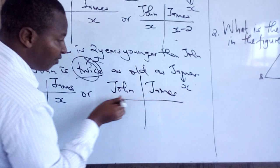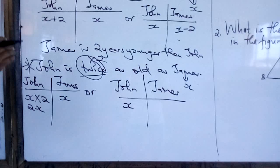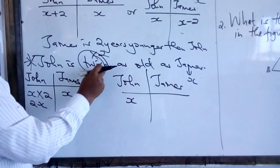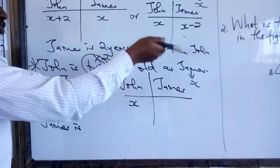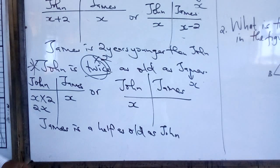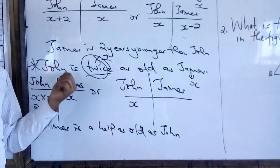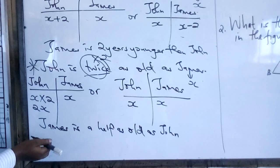Alternatively, you can put x under John, but then you must rephrase starting with James. The statement is: John is twice as old as James. If you start with James, you say James is half as old as John. Because John is the reference point, you write x first, and since James is half, it becomes x times one-half. So the age of James is one-half x.